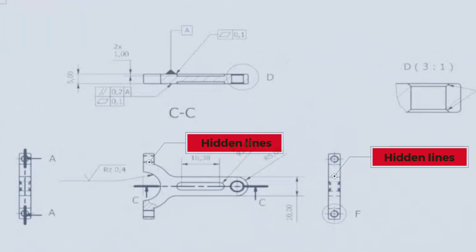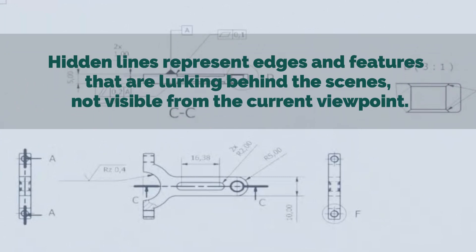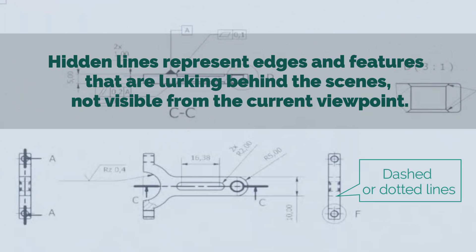Hidden lines are like the secret agents of technical drawings. They're the ones that represent edges and features that are lurking behind the scenes, not visible from the current viewpoint. Now, to make sure these hidden elements don't go unnoticed, they're drawn with dashed or dotted lines, unlike the solid lines you see for visible features.